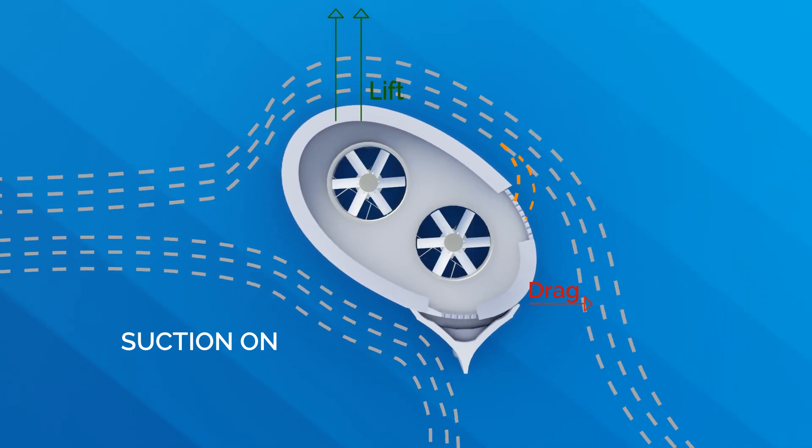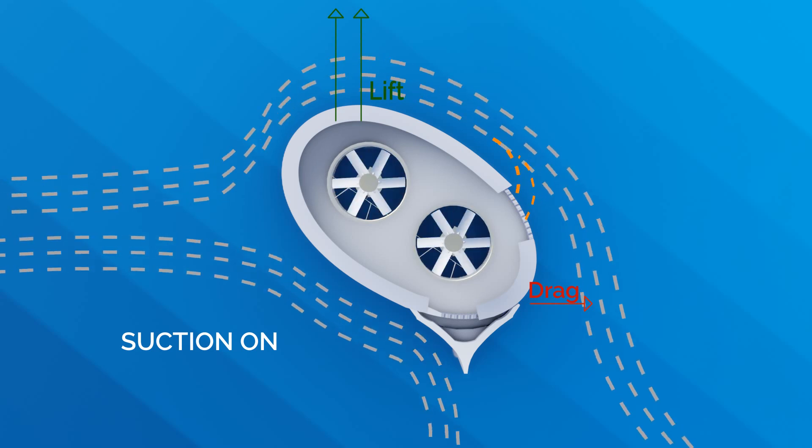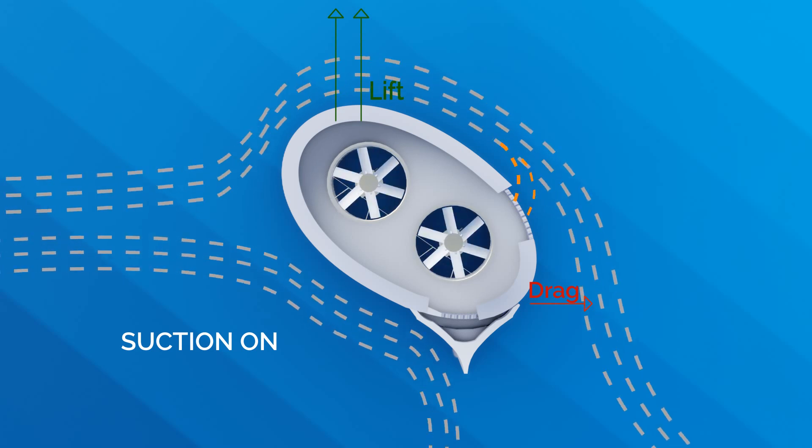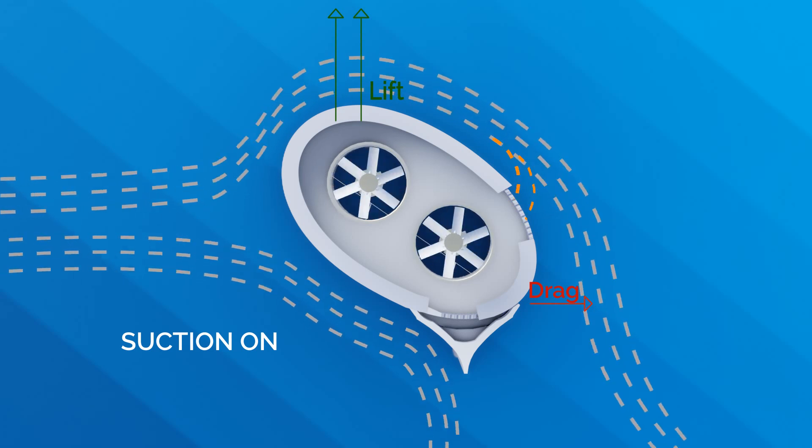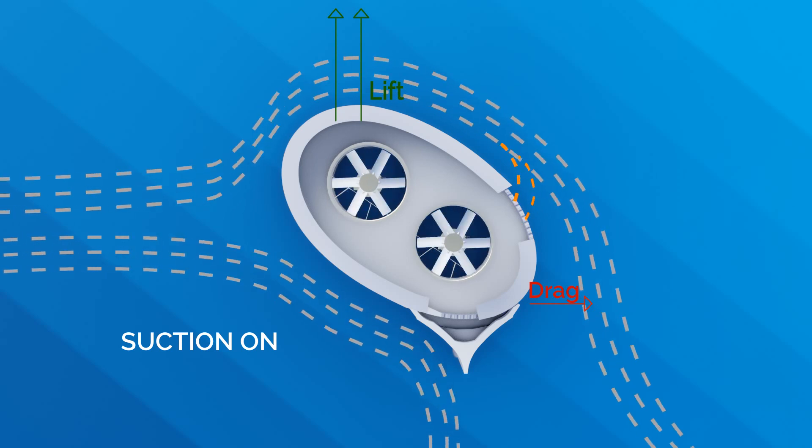This allows the eSail to generate lift six to seven times higher than a wingsail, which means that for the same thrust, it will be six to seven times smaller.